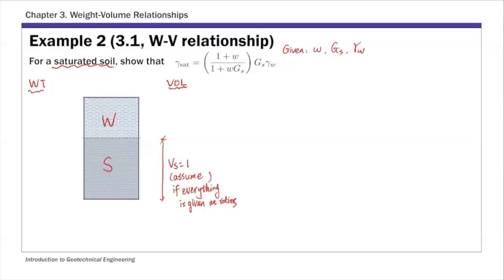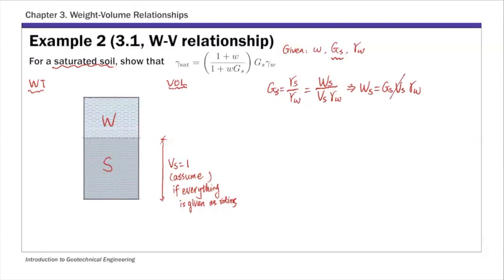For this example, I'm going to start with the weight side. For the solids, because we are given specific gravity — specific gravity is defined as γ_s / γ_water, and γ_s equals weight of solid over volume of solid — since we're given Gs and we assumed Vs = 1, we can derive the weight of solid as Gs × Vs × γ_w. With Vs = 1, the weight of solid is simply Gs × γ_w.